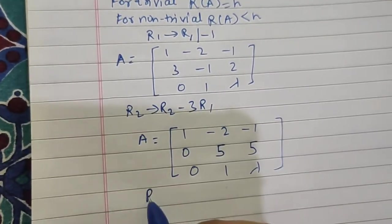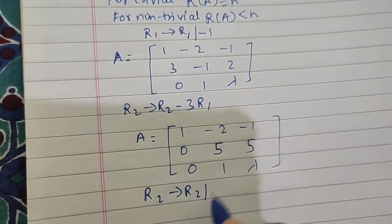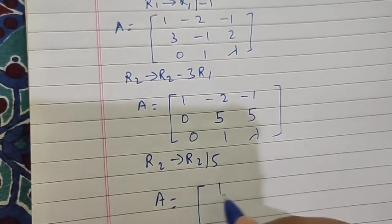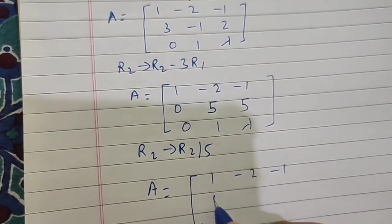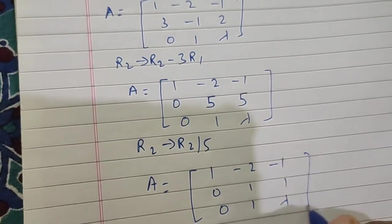We can write R2 as R2 divided by 5, which gives us 1, minus 2, minus 1; 0, 1, 1; and 0, 1, lambda.